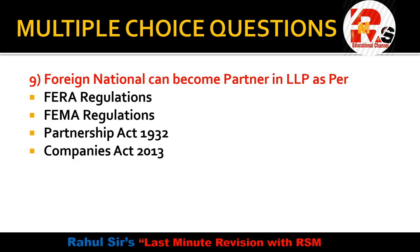Question 9: A foreign national can become a partner in an LLP as per which regulations? Options are: FEMA regulations, Partnership Act, Companies Act, or Partnership Act or Companies Act. The answer is FEMA — Foreign Exchange Management Act. FEMA was enacted in 1999 and replaced FERA (Foreign Exchange Regulation Act), which had very strict regulations. So the right answer is FEMA.